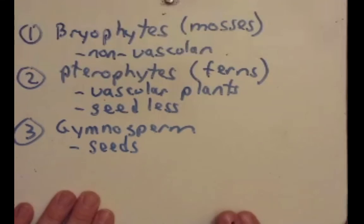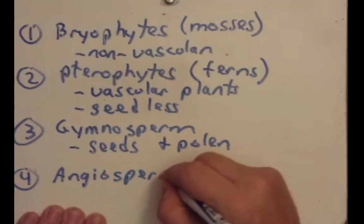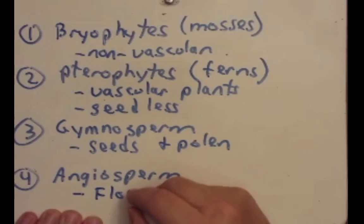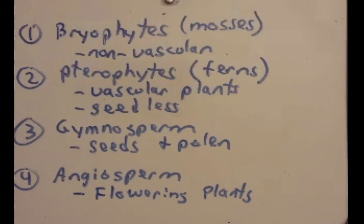Our fourth group, the angiosperms. These also have seeds and they also are vascular plants. But their key feature is that they are flowering plants. All right, that ends this first podcast over objective one. There will be one more podcast that covered the last four objectives, but there's not a lot of detail in those last four objectives. If you have any questions, please let us know. Bye.